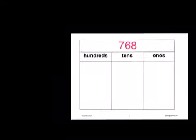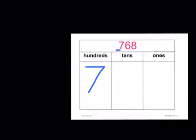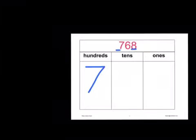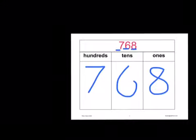How did you go? How many hundreds did you get? Remember, we need to look at the position, remembering that the hundreds is the third one across. It is seven. There are seven hundreds in 768. How many ones are there in 768? Remember, that's the last one there. There are eight ones. And how many tens are in 768? Tens is next to the ones, so there are six tens.